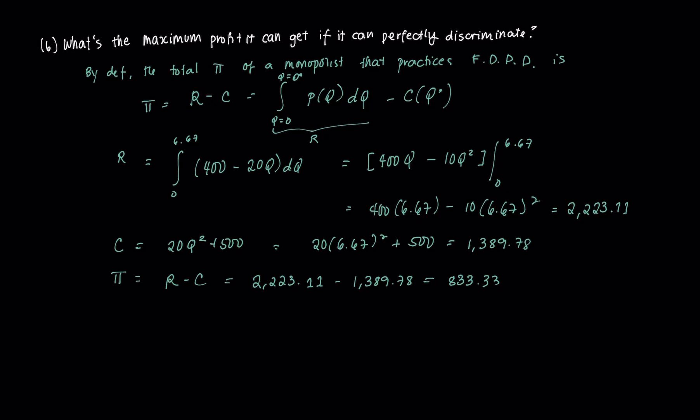What you'll notice is this profit of 833.33 is greater than the profit of a pure monopoly, which is equal to 500, which we derived in the last video if it chooses to charge that one single price wherein MR equals MC. So we can see that the profit of the monopolist is certainly larger when it is able to practice first-degree price discrimination.